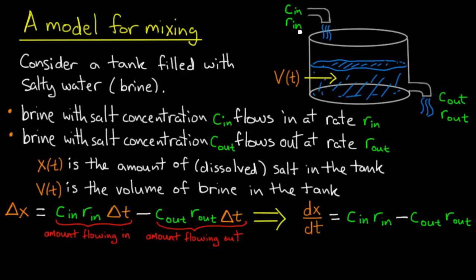For example, if the rate in is one gallon per minute, and the concentration in is one gram per gallon, then the rate at which salt flows in is C_in times r_in, which is one gram per minute.